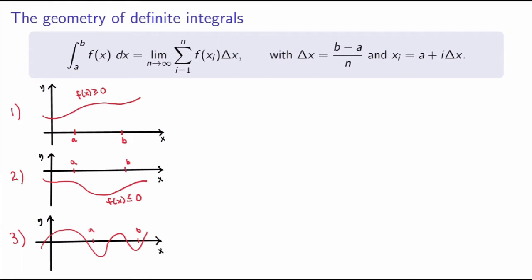Since I introduced Riemann sums as a way of calculating the area under the graph of a function, it makes sense to start with the geometric properties of definite integrals. In case number 1, where the function is positive over the interval a to b, the Riemann sum approximates the area under the graph, and taking the limit calculates the true area. So the integral of f of x from a to b calculates the area shaded in blue.